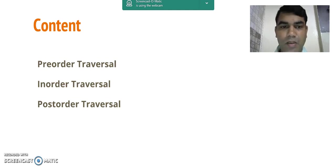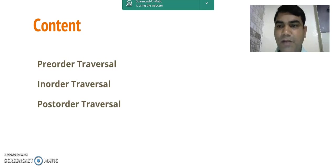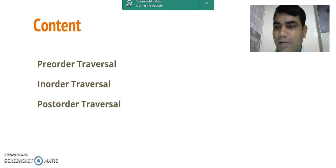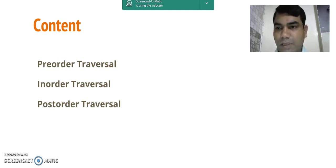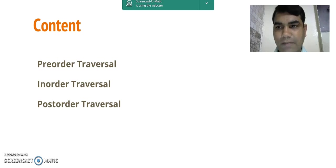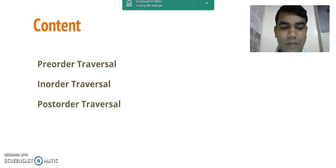The root decides the traversal sequence. If the root comes first in the traversal sequence, it is called pre-order traversal. If the root comes in between, it is called in-order traversal. If the root comes at the last, it is called post-order traversal. Now we will see all these traversal sequences with examples one by one.